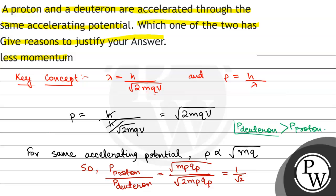From here we will have momentum of deuteron is greater than momentum of proton. So less momentum will be for proton. The correct answer will be proton.